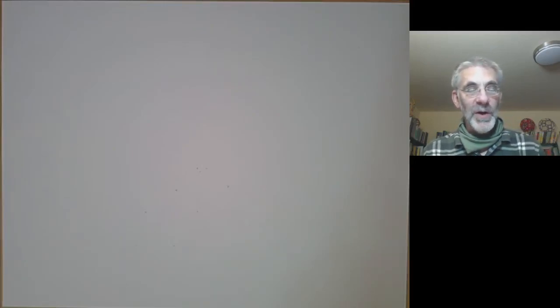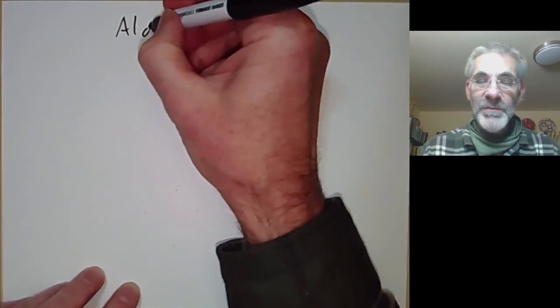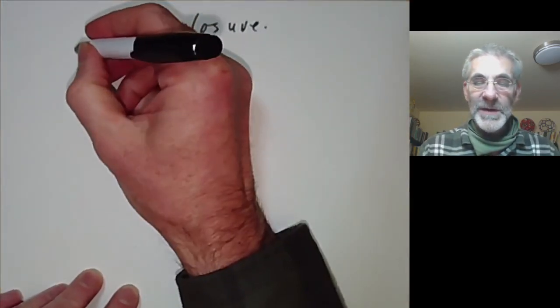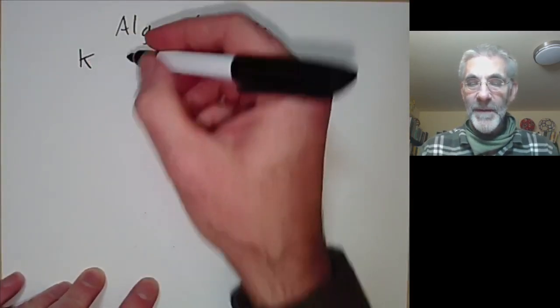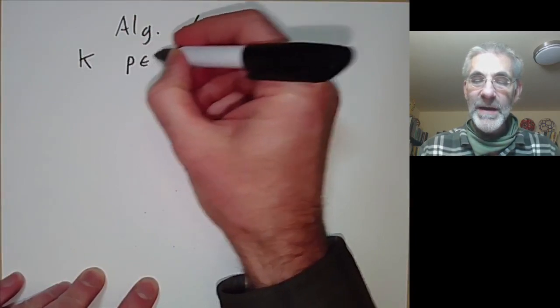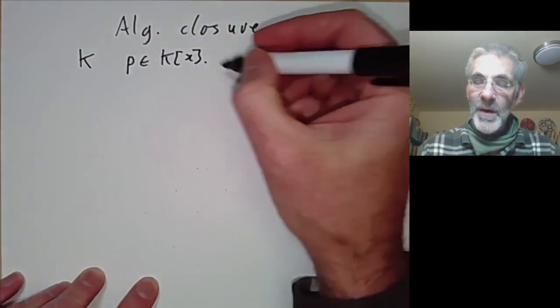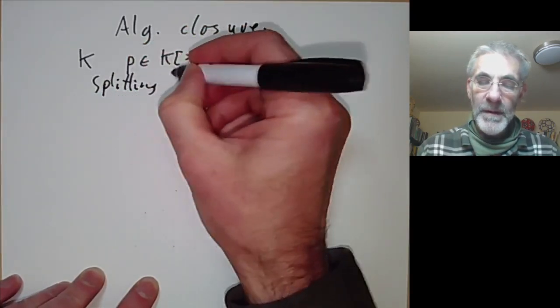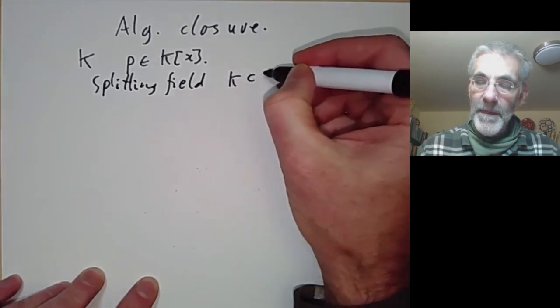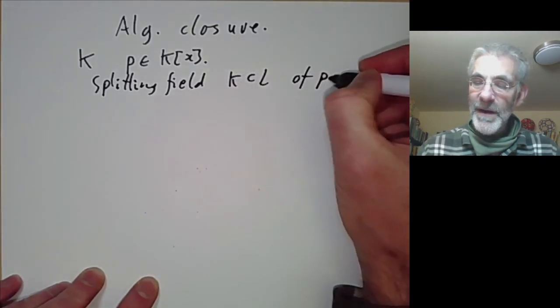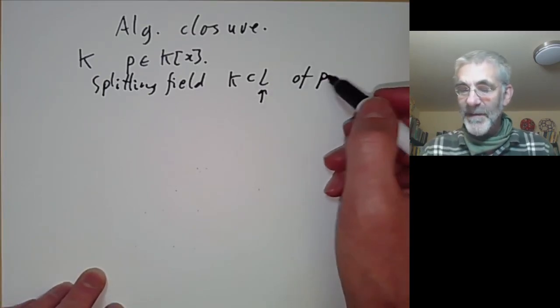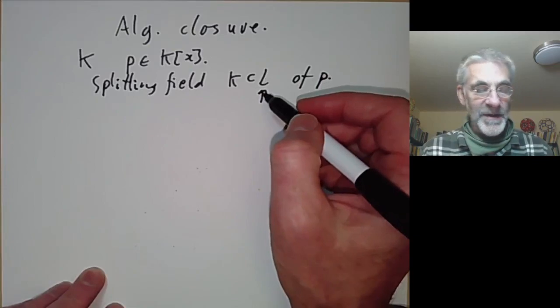This lecture is part of an online graduate course on Galois theory and will be about the algebraic closure of a field. Last lecture we saw that if you've got a field k and a polynomial p with coefficients in k, we can find a splitting field of p where this is generated by the roots of p and p factorises into linear factors over L.